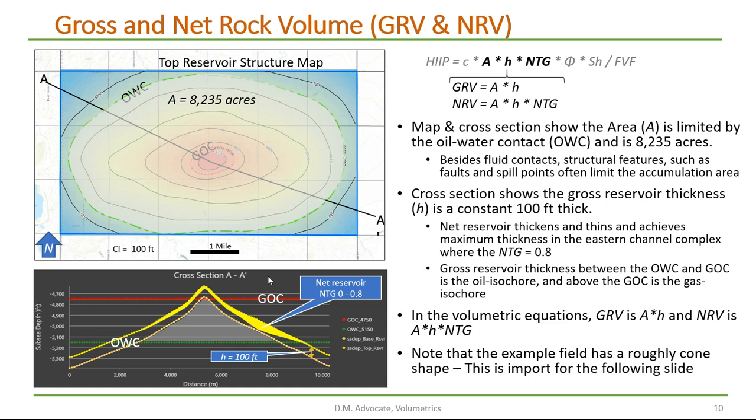Let's take a look at this in cross section view. We can see the anticlinal structure, the top and the base of the gross reservoir section. Here's the oil water contact in green. So this is what limits our accumulation area.